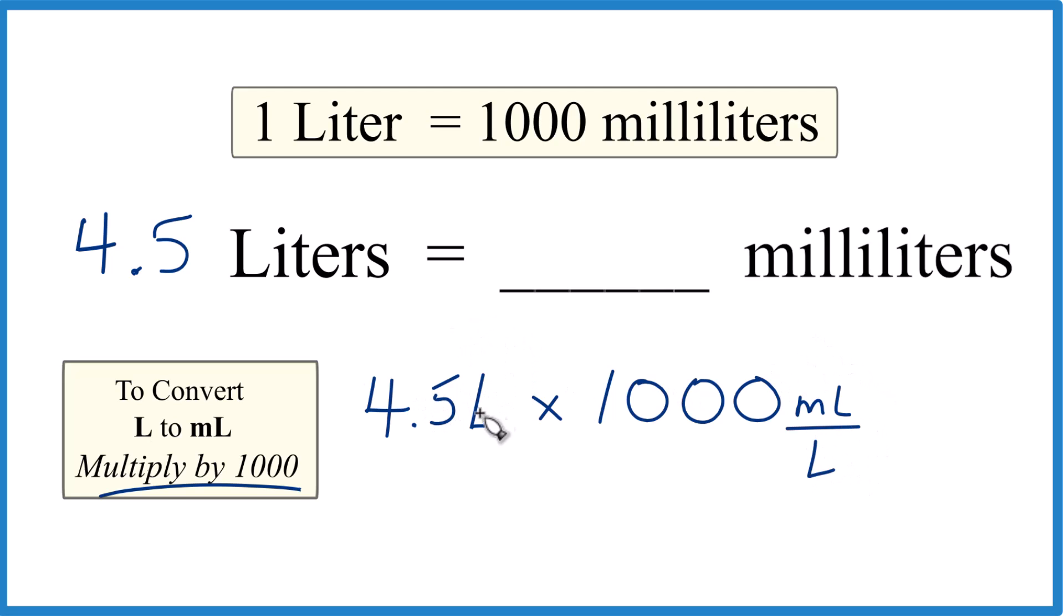Now, when we multiply, we have liters on top and the bottom. They cancel out. We're left with milliliters. So 4.5 times a thousand is 4,500.